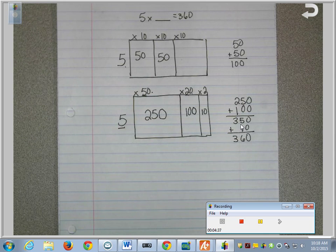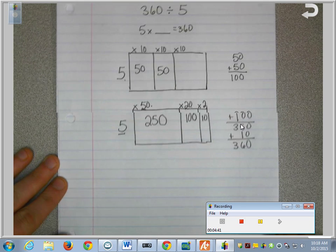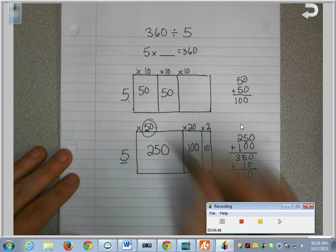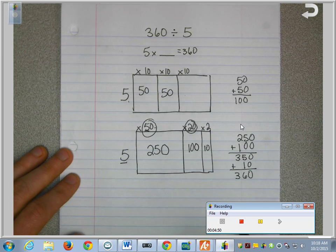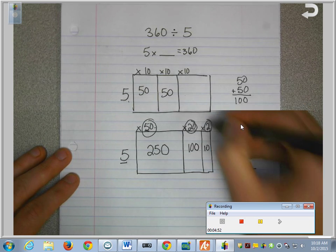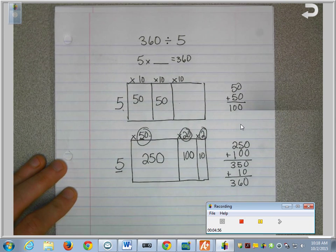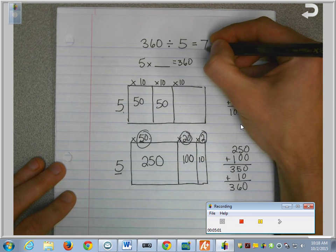So in this problem now, here's where we find what the answer is. We look at how many groups of 5 we ended up multiplying in all. And we kept track of that on top. First, I multiplied by 50 groups of 5. Then I multiplied by 20 more groups of 5. And then I did 2 more groups of 5. And as a total, that equals 72 groups of 5. So that's the answer to my division problem. The answer is 72.